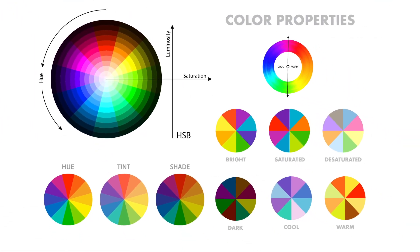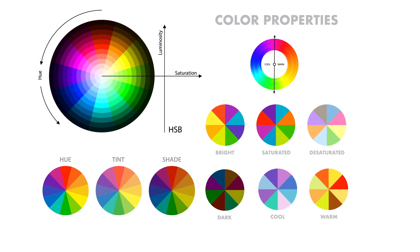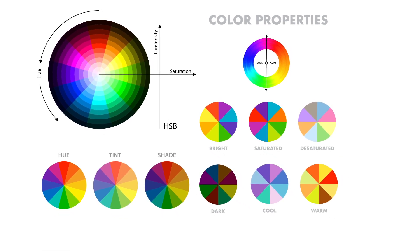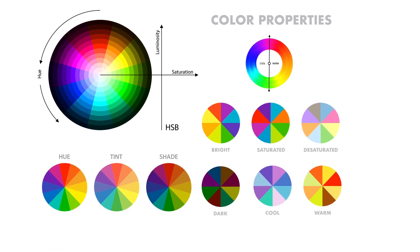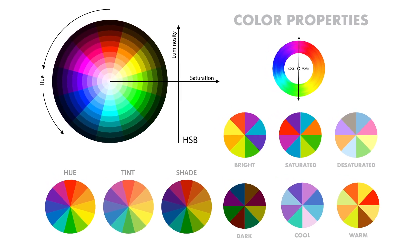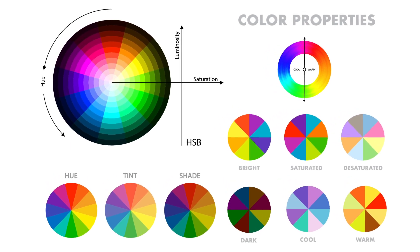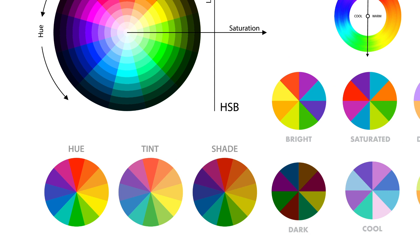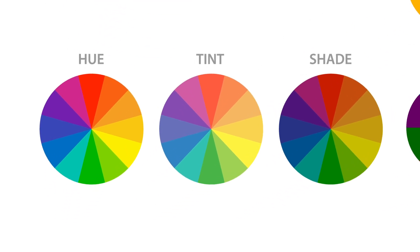When it comes to color properties, we have hue, shade, tint, and tone — and you'll encounter these in many design applications. Hues are simply colors. Tints and shades are variations of hues.